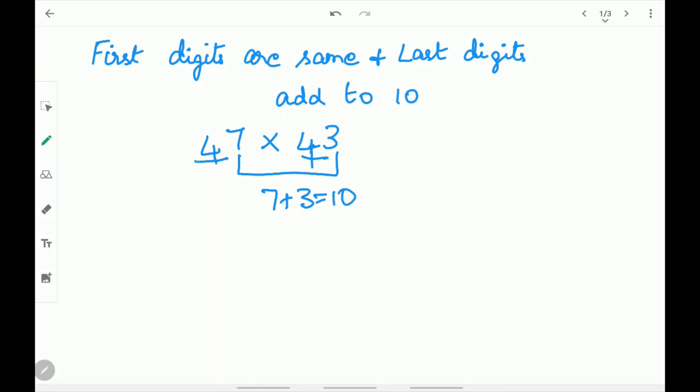First you need to know the first digit. The first digit is 4. One more than 4 is 5. 4 times 5 is 20. So write 20 over here.